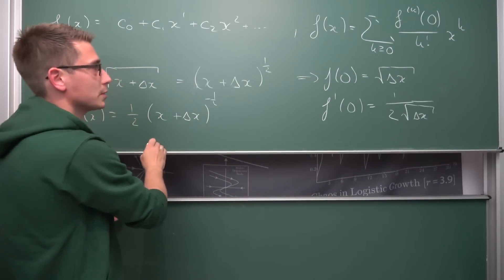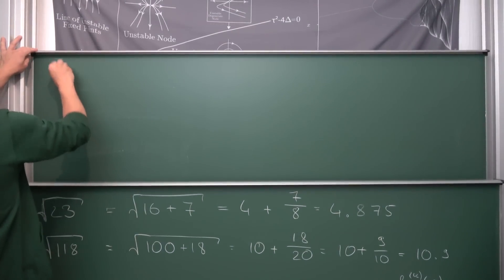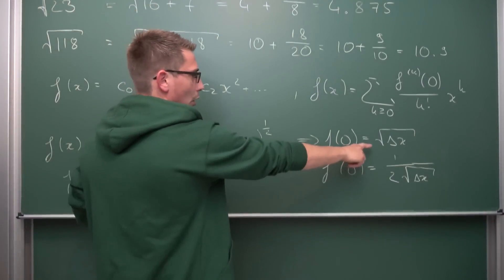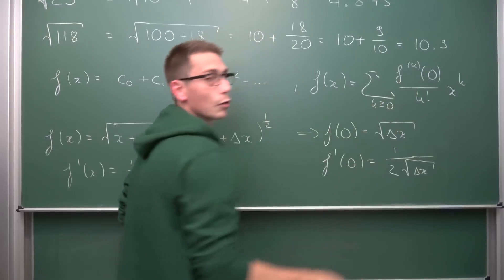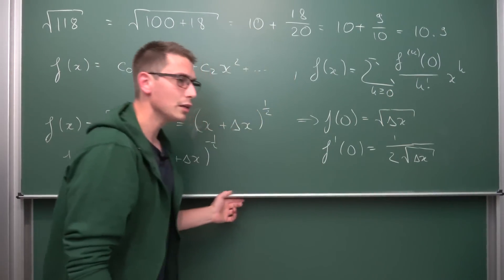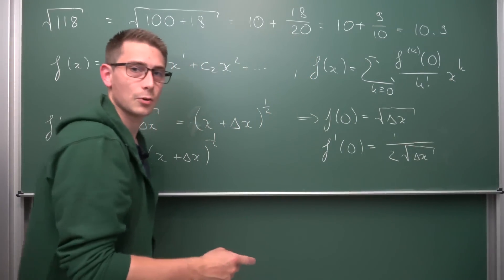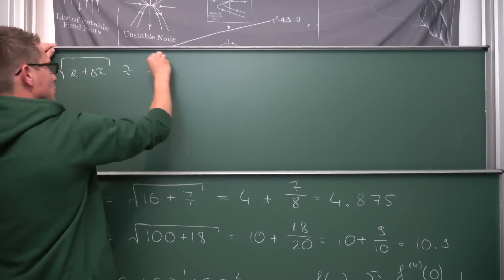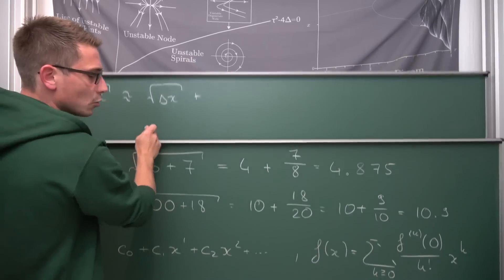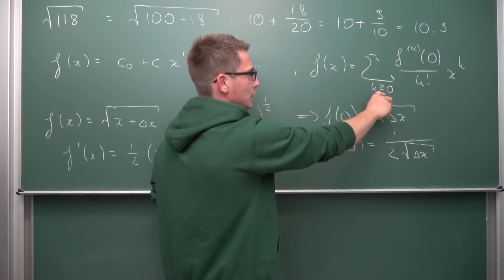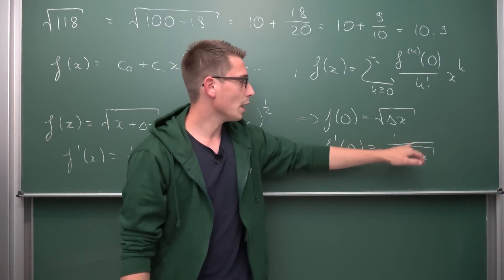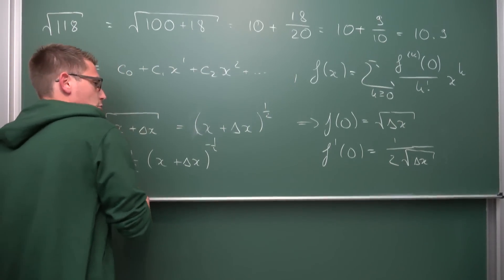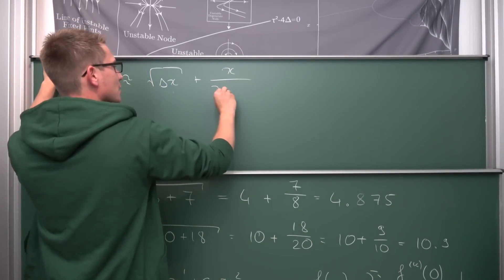Overall, the square root of x plus delta x can be approximated by linear approximation. The zeroth term gives us c₀ equals the square root of delta x — that's f(0) divided by zero factorial times x to the zero power. Then we add the first term: f'(0) over one factorial times x, which gives us x divided by two times the square root of delta x. So our linear approximation is: square root of delta x plus x over two times the square root of delta x.